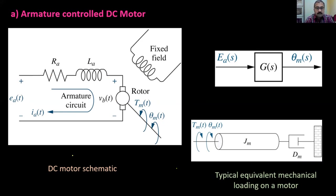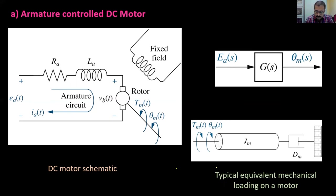This motor develops a motor torque — an electrical torque — which is proportional to the speed dθm/dt. Our aim is to find a transfer function between the output displacement θm(s) and the applied armature voltage Ea(s).